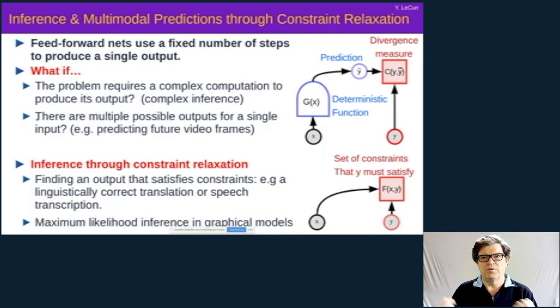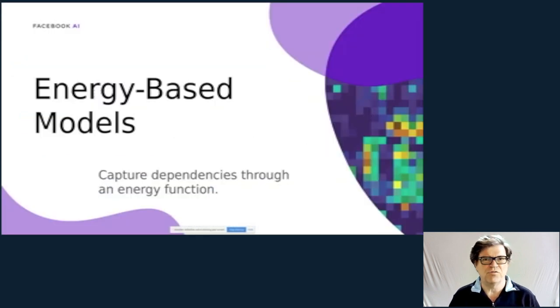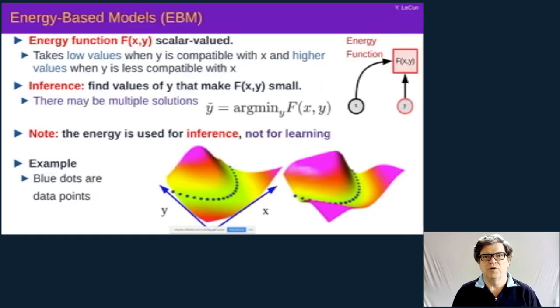We have to replace this by something that can make multiple predictions. And one way to do this is to go through an implicit function that basically measures the compatibility between the variable we observe, x, and the variable we need to predict, y. So this function f will take low values if x and y are compatible with each other, and higher value if y is incompatible with x, if it's not a good continuation for the video, for example. The symbolism I'm using here is very similar to factor graphs in graphical models, except for this extra symbol of deterministic function. Now I'm going to advocate to use energy-based models, which basically measure the compatibility between x and y through this energy function.